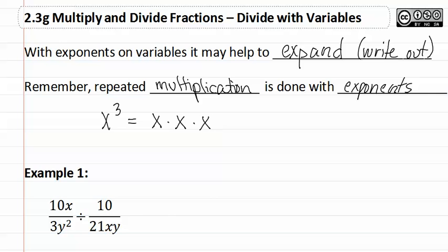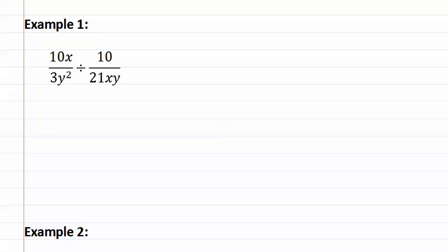Let's look at example one. In example one, we first need to write the first fraction 10x over 3y squared, and we can expand out the y squared to be y times y.